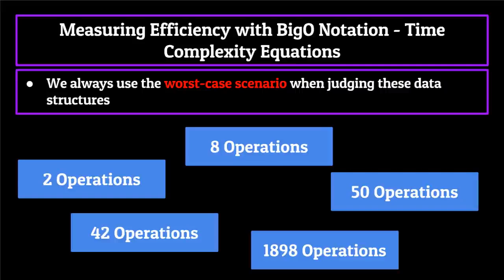An important thing to note here is that we always use the worst case scenario when judging these data structures. This is because we always want to prepare for the worst and know which data structures are going to be able to perform under the worst conditions. Just keep in mind that when judging data structures, we always use the worst case scenario.